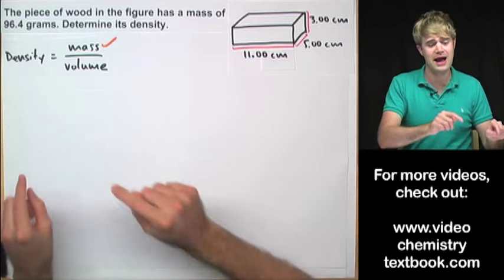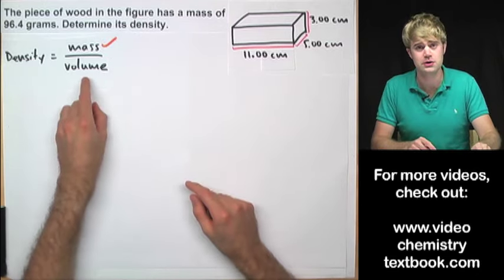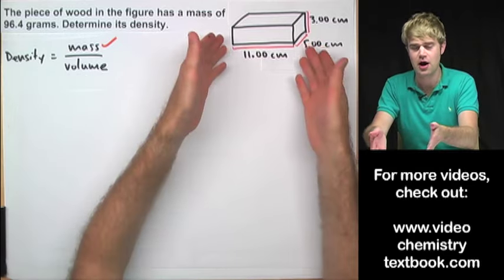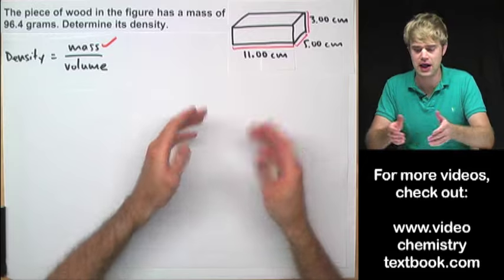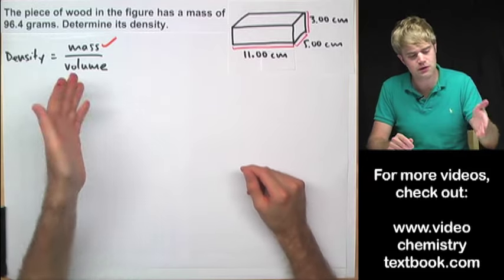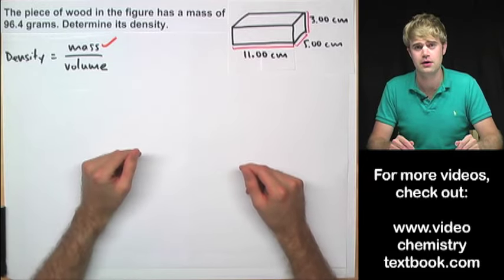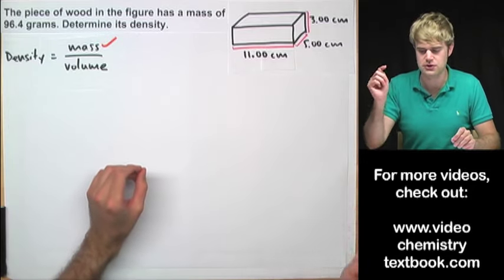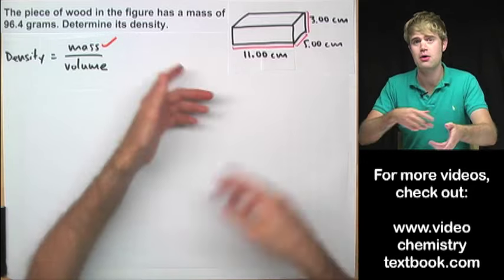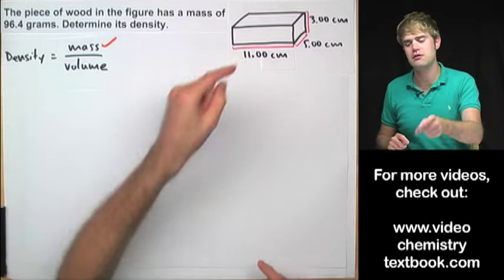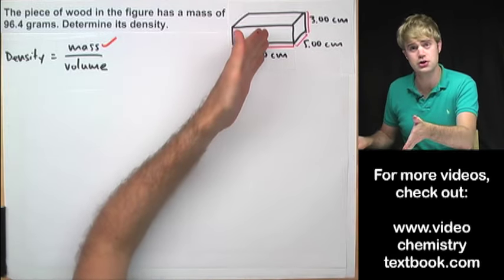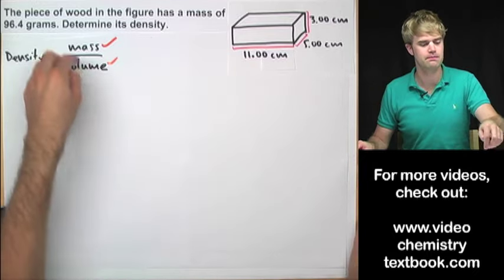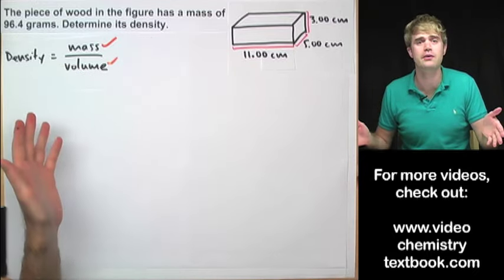But in past problems, they've told us what the volume is. We don't have the volume here; instead we just have the measurements of the lengths of this rectangular block. So how do we find the volume? As you probably remember from geometry, all we got to do is take the length times the width times the height, multiply them together and that will give us the volume of this three-dimensional object. So we'll do that and that will get us the volume, and then we can do the division and figure out what the density is.